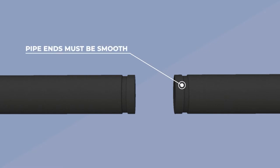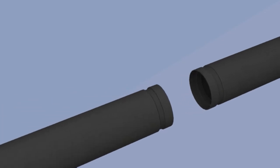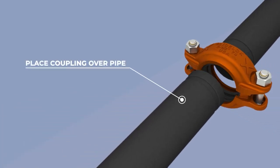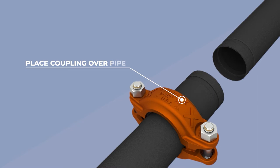Pipe end must be smooth and free from metal burrs, sharp edges, or projections. Place the coupling over the pipe, making sure the coupling does not overhang the pipe end.